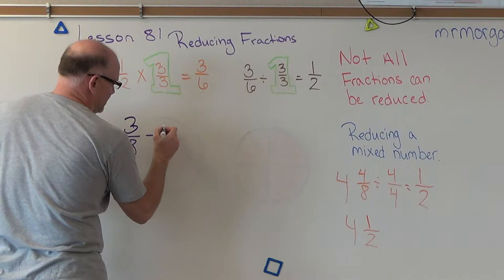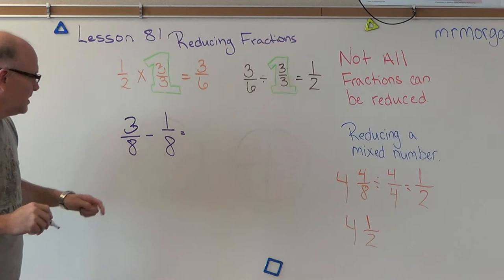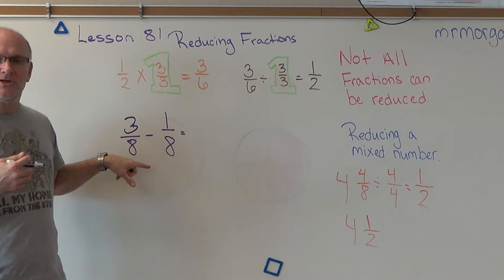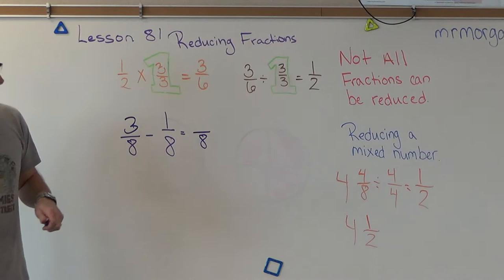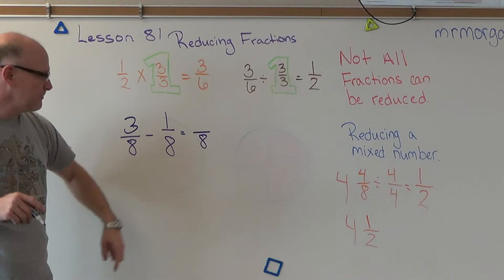First one: 3/8 minus 1/8 equals... Do your subtraction. Remember with addition and subtraction, your denominator stays the same and you're just adding or subtracting the top number. Do the subtraction problem and then reduce your answer.